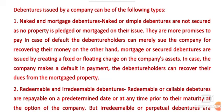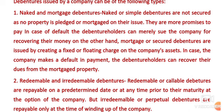Naked or simple debentures are not secured, as no property is pledged or mortgaged on their issue — no property or asset is kept as security. They are not secured, so in case of default, the debenture holders can merely sue the company for recovering their money. If the company defaults, the debenture holders can only go to court against the company saying the amount was given but not repaid.